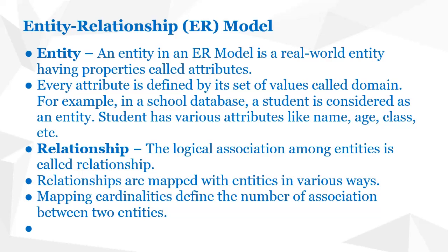Cardinality means how many entities participate in a relationship. In this example, many students can learn from one faculty — there is N cardinality on the student side. When many participants are involved, we designate it by N. When only one participates, we designate it by one. So in this example, multiple students are taught by a single teacher — the cardinality is N to 1.